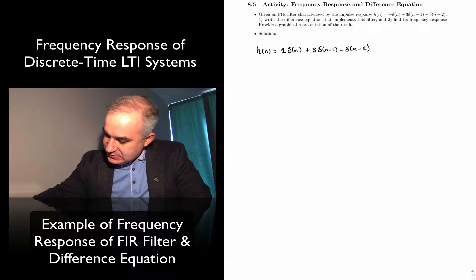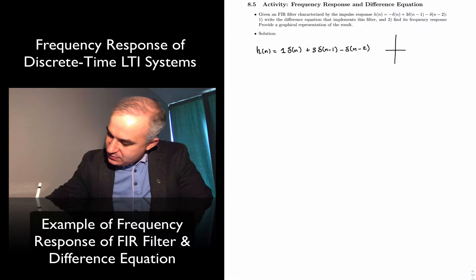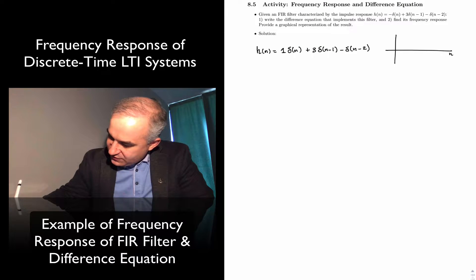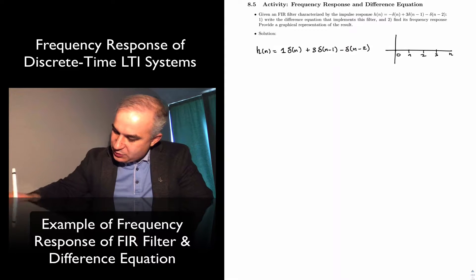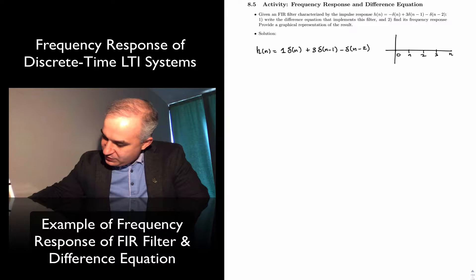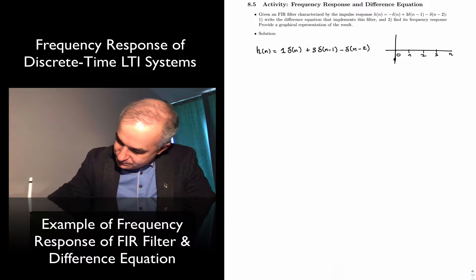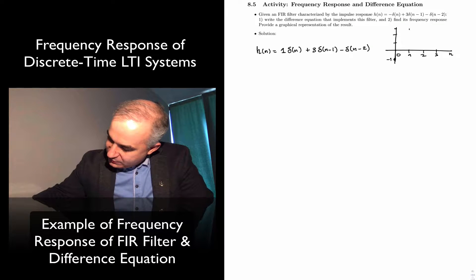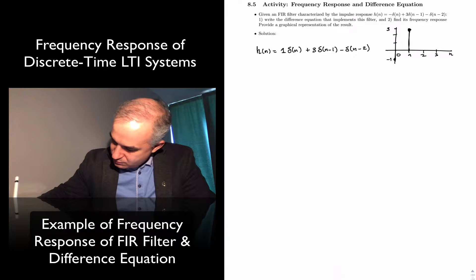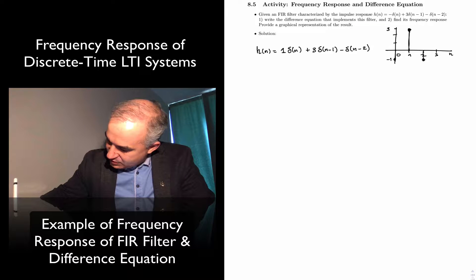If we are to plot this, we have a function of n at 0, 1, 2, 3, and so on. At n=0 we have the value 1 (or minus 1 depending on sign), at n=1 we have 3, and at n=2 we have minus 1.